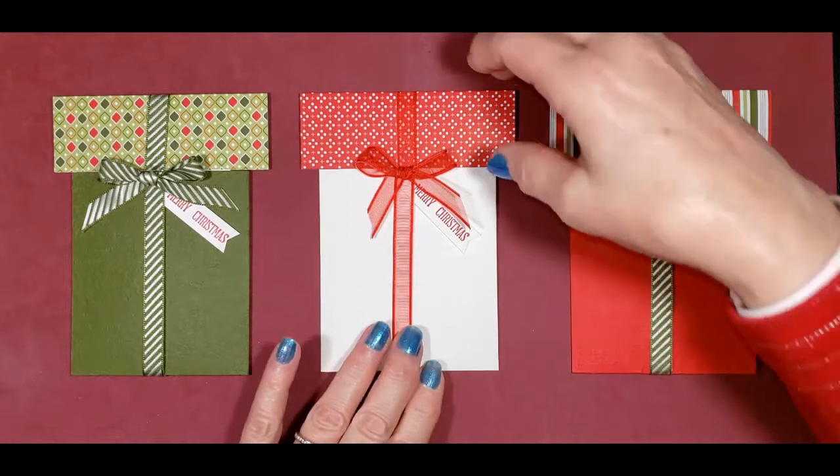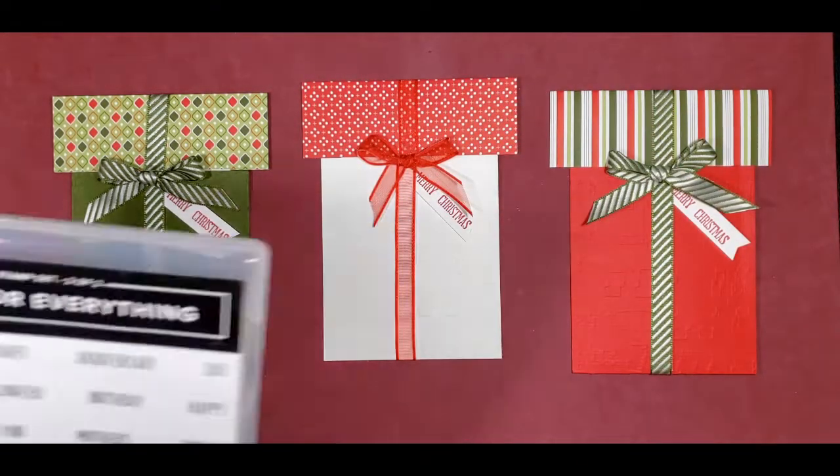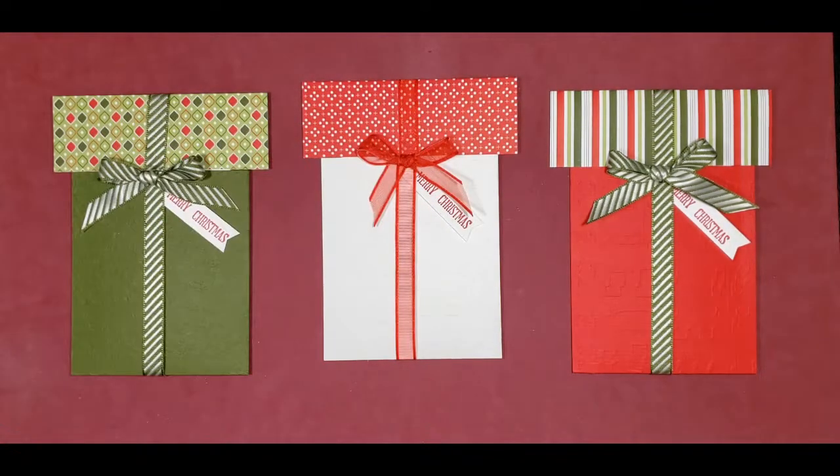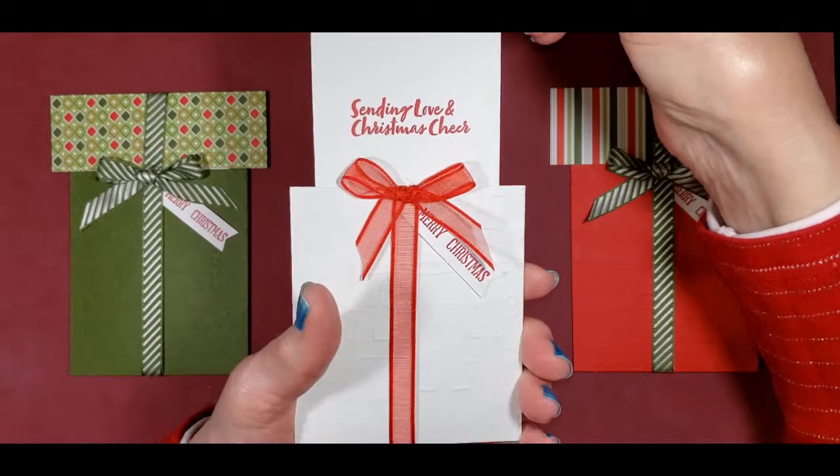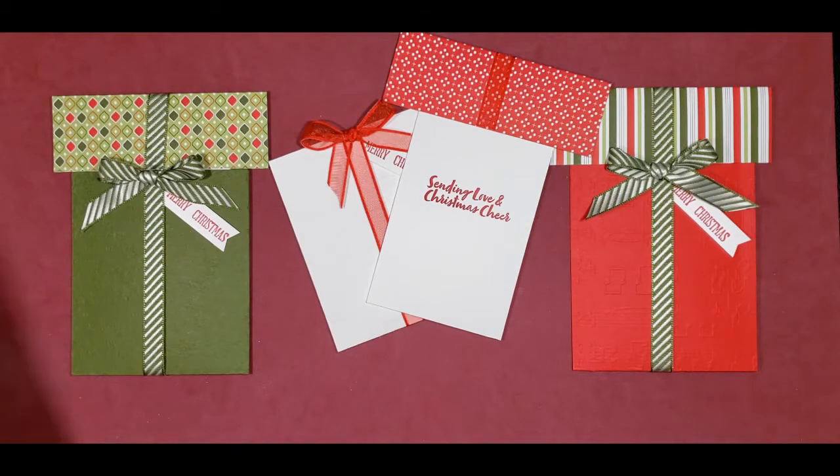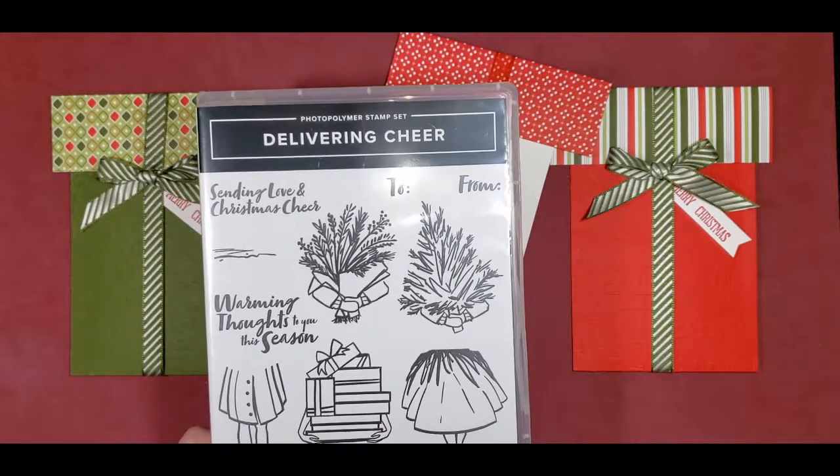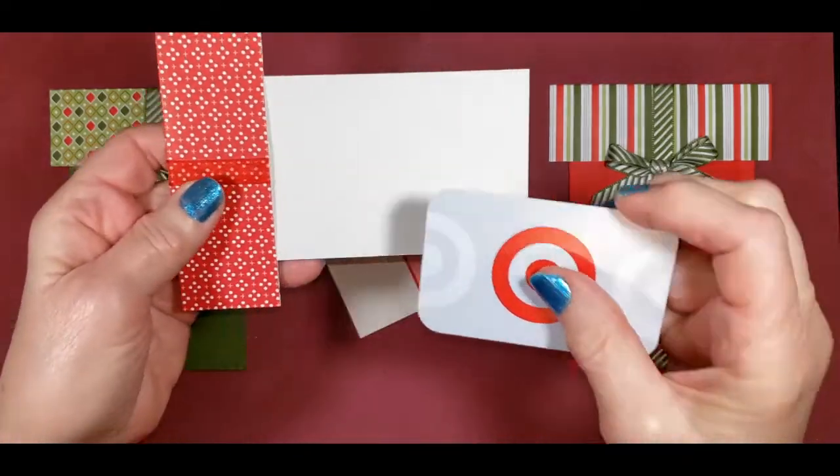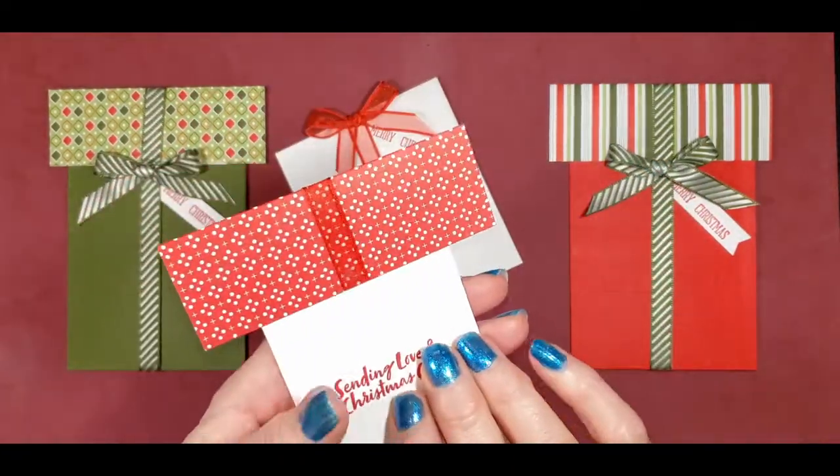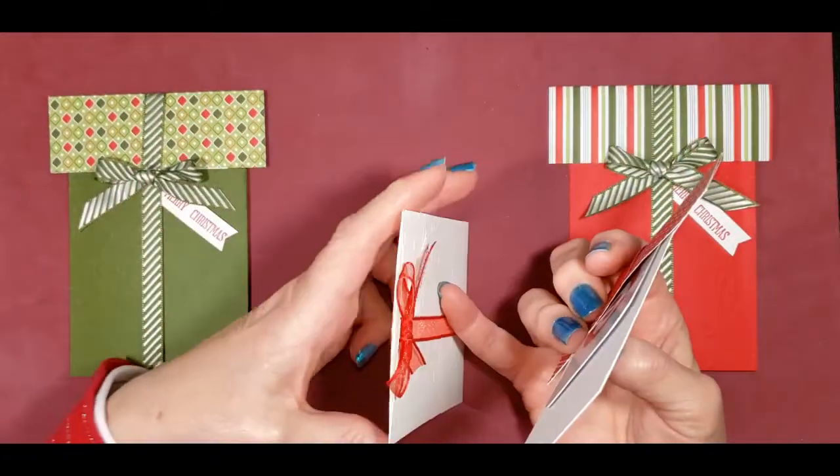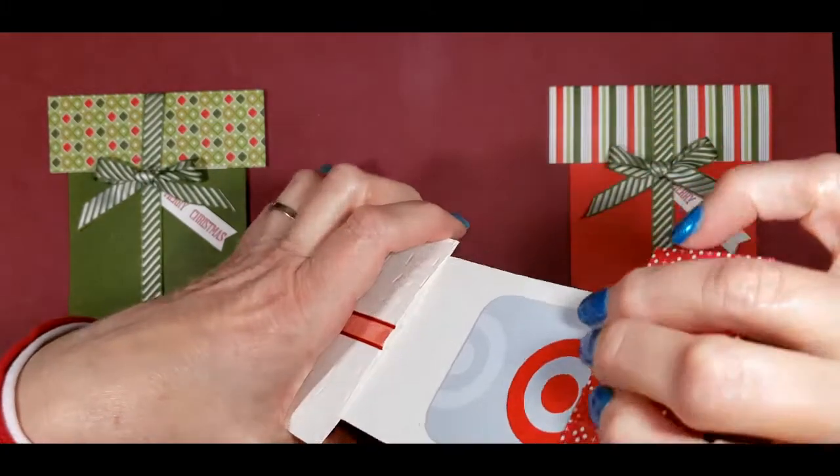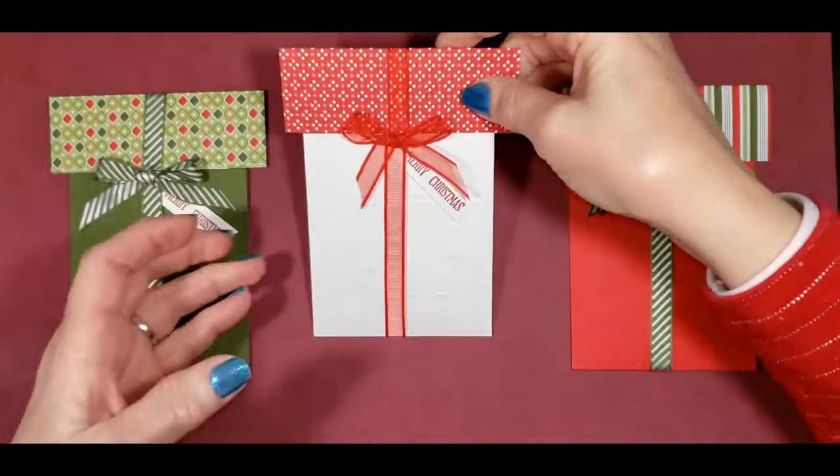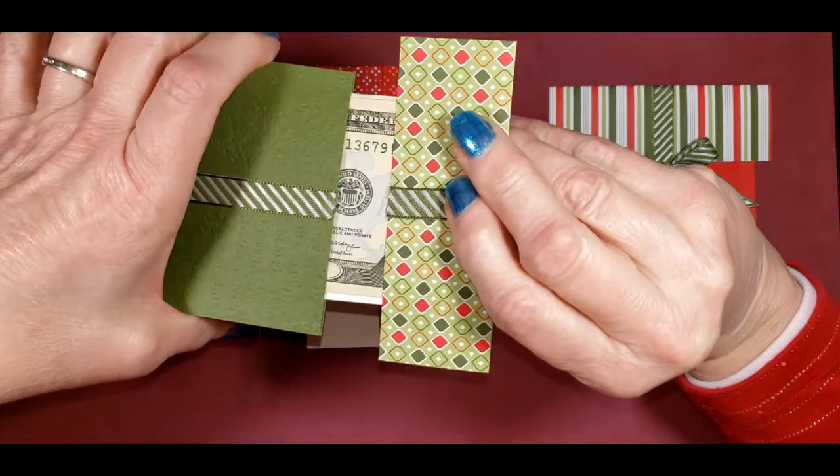Well, here are the gift card holders. We have the Merry Christmas on the front, and that is from the Wish for Everything. Here is the Merry, and here's the Christmas. On the inside we have our Sending Love and Christmas Cheer, and that is taken from the Delivering Cheer. And then on the back we have the gift card holder. It's a little pocket there that can go in, and then you just slip this back inside.